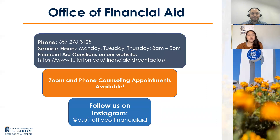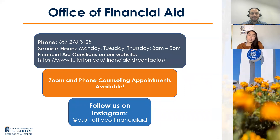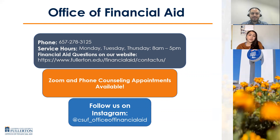Here is the contact information for our Office of Financial Aid. Our phone number is 657-278-3125. Phone service hours are Monday, Tuesday, and Thursday from 8am to 5pm. You can also submit a question or inquiry through the question platform on our website. If you have any extenuating circumstances and would like to speak with a counselor, feel free to call or message us first to set that up. For upcoming updates, we post on our website and on our Instagram page.